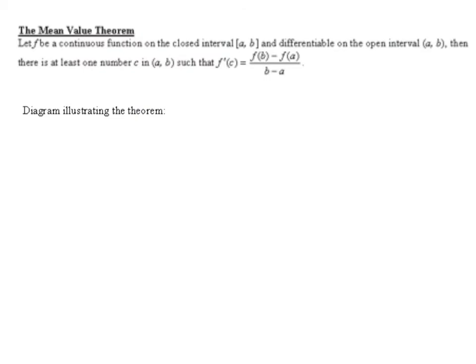So now it is time for one of the most important theorems in calculus — the Mean Value Theorem, abbreviated MVT. But you're not allowed to abbreviate it until you know what the words mean. Just like IVT is the Intermediate Value Theorem, this is the Mean Value Theorem. It says: let F be a continuous function on the closed interval and differentiable on the open interval AB — this is sounding familiar, like Rolle's — then there is at least one number C in AB such that f prime of C equals f of b minus f of a over b minus a. Notice that this looks like a slope formula, but with no limit. So this is saying the derivative, or slope of the tangent line, is equal to the slope of the secant line.